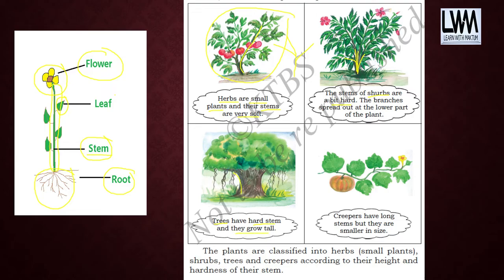Coming to trees: trees have a hard stem and they grow tall. Then coming to creepers: creepers have long stems but they are smaller in size. So we have seen herbs, shrubs, trees, and creepers. This classification is based on the height and hardness of the stem.